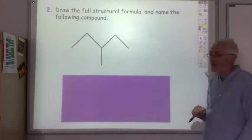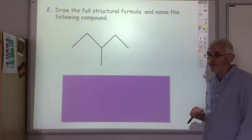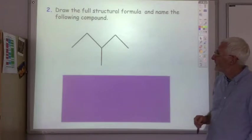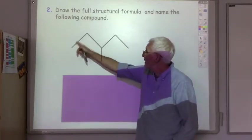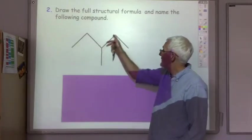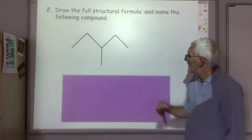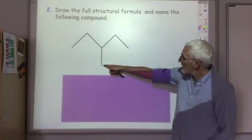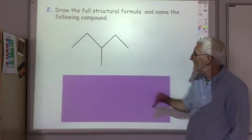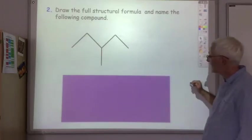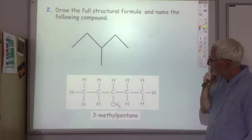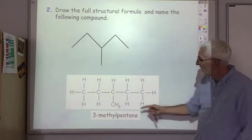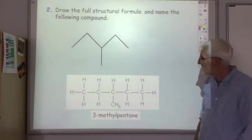How about this one? The main chain has one, two, three, four, five carbons, and we've got one carbon here as a side group. So what we've got is 3-methylpentane.